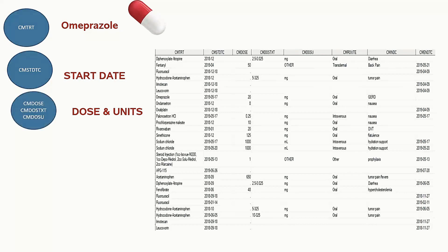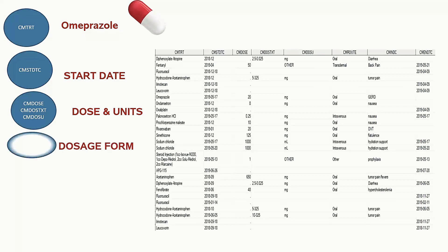If the subject tells us the dose and unit they have taken, that numeric dose information is captured in the variable CMDOSE. If it is a character version — for example a range like this mg to this mg — that text information is captured in the variable CMDOSTXT. If it is a numeric dose, we directly map it into the CMDOSE variable. The unit — whether mg, mL, or anything else consumed by the subject — is captured in CMDOSU. The dose form, whether capsule, tablet, injection, suppository, or other forms, is captured in CMDOSFRM.